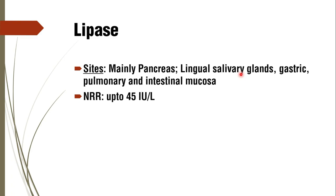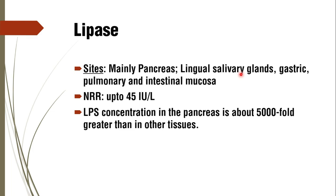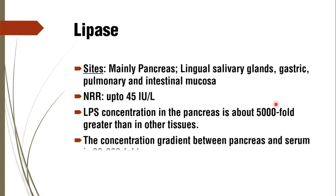The normal reference range of lipase is up to 45 international units per liter. The concentration of lipase in the pancreas is about 5,000-fold greater than in other tissues, and about 20,000-fold greater compared to serum activity. Because of this concentration gradient, even a small fraction of pancreatic necrosis is going to manifest as a large increase in serum lipase activity, making it very sensitive and specific for diagnosing pancreatitis.